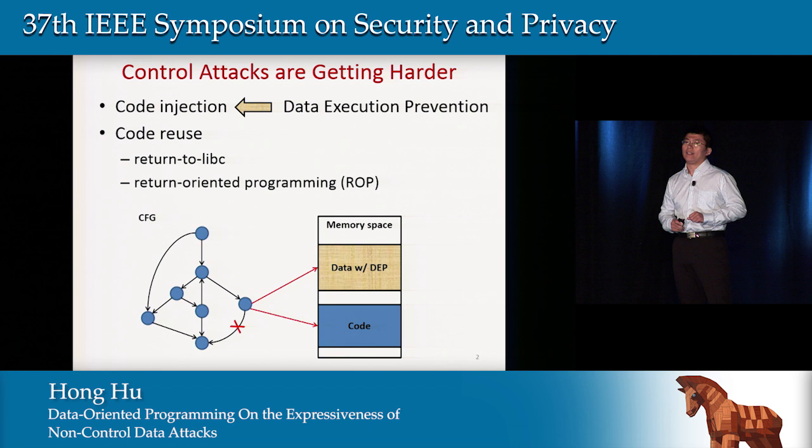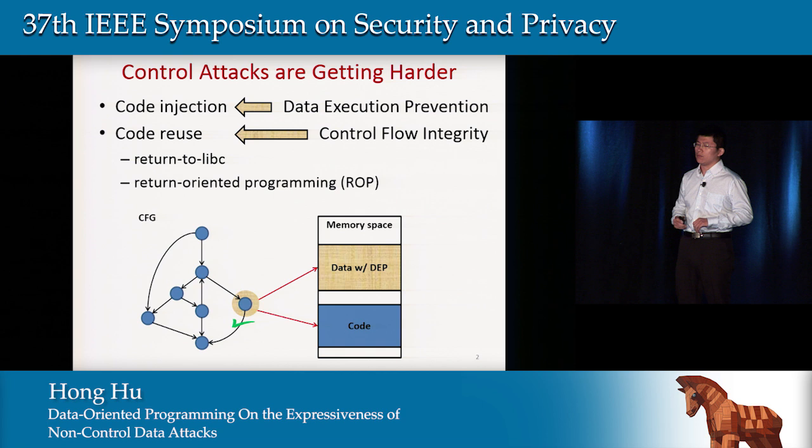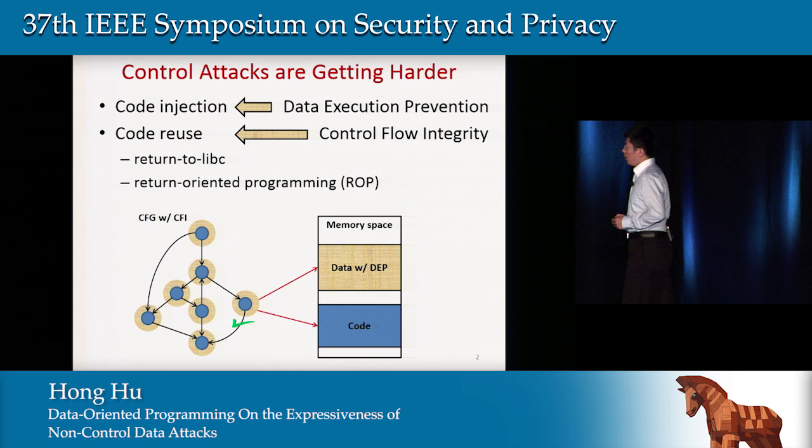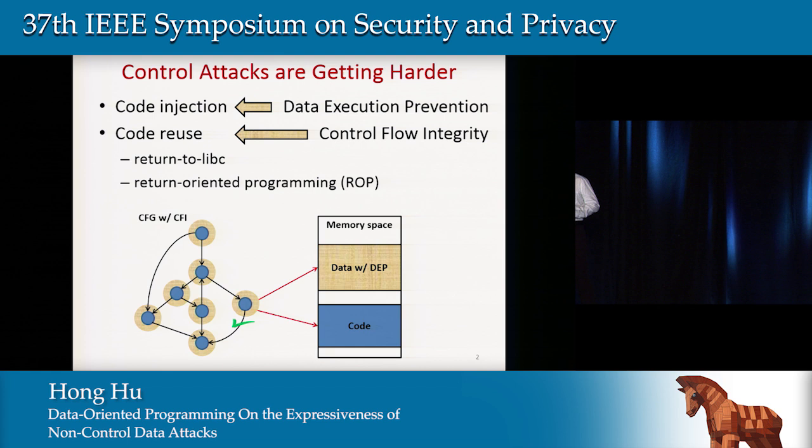To prevent such attacks, researchers proposed control flow integrity, which tries to block all malicious control flow transfers. In this way, if attackers want to build a successful exploit, they have to bypass CFI in the first place.